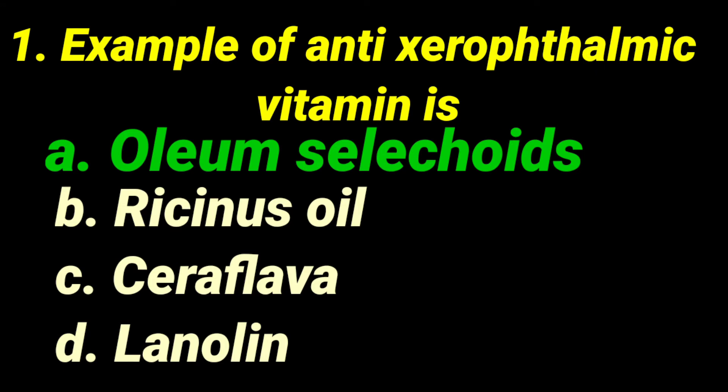The first question is: example of anti-xerophthalmic vitamin is dash. The first option is Olium salicis, which is another name for shark liver oil. Shark liver oil is used for the treatment of vitamin A deficiency. Anti-xerophthalmic vitamin means the vitamin used in xerophthalmia.